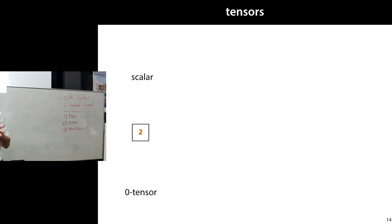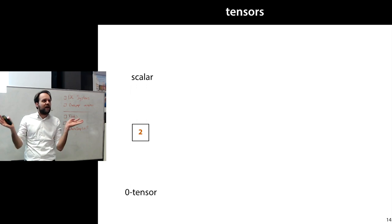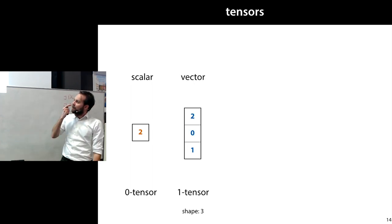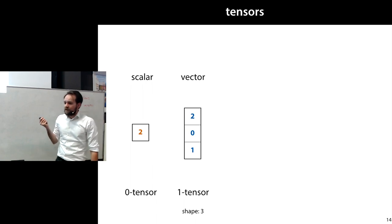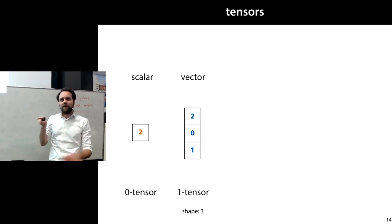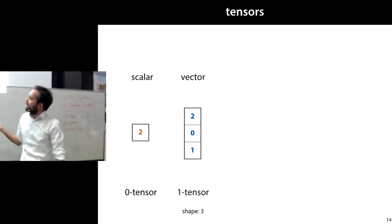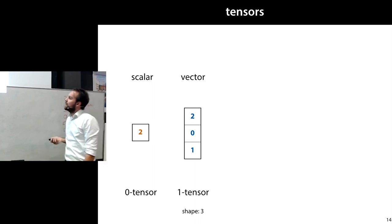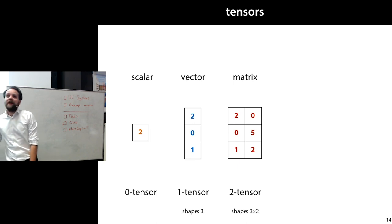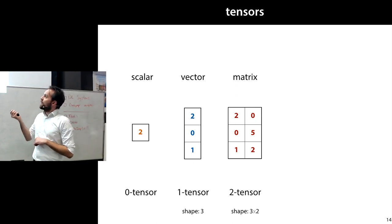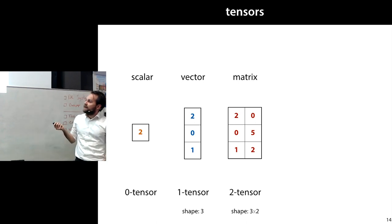Tensors are our basic data structure — multi-dimensional arrays of a given number of dimensions. A zero-dimensional array is a scalar. A one-dimensional array is a vector, with a shape expressed by one number — its length. A two-tensor is a matrix, a two-dimensional array with shape expressed by two numbers, such as three by two. For matrices it's important to remember that the vertical dimension — rows — comes first.